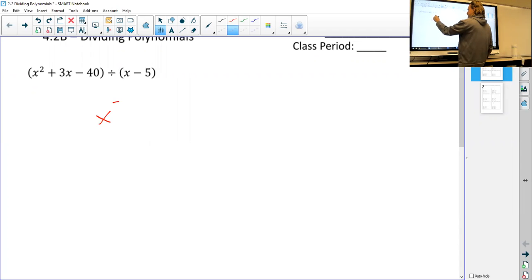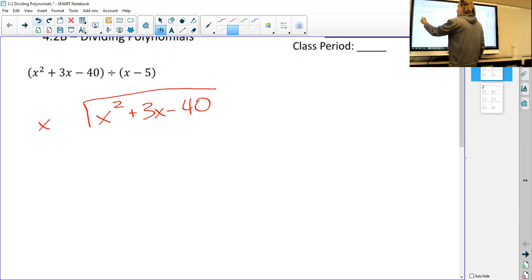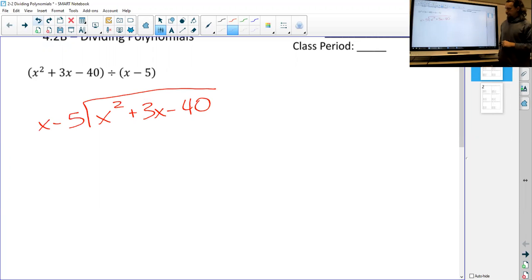So the basic idea is you take the first of the two polynomials and put that inside your division house. It's just the first of the two because that's how division works, top in, bottom out. X minus 5 on the outside.